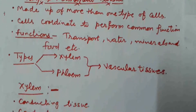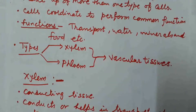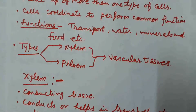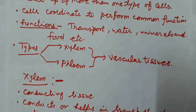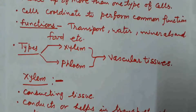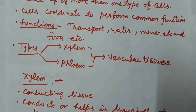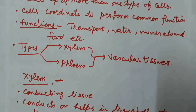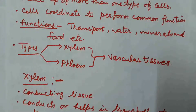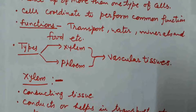They are also known as vascular tissue. Just as in our body, vascular tissue is blood — it is the main tissue in our body that performs the function of transport of substances — similarly, in plants, the vascular tissue is xylem and phloem, which help in transport of substances from one part of the plant to another. First we will discuss the xylem.